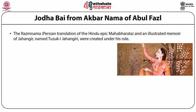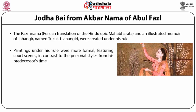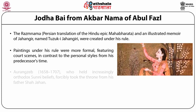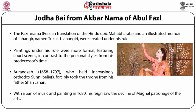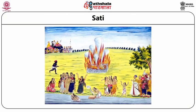The Razmnama and an illustrated memoir of Jahangir named Tuzuk-i-Jahangiri were created under his rule. Jahangir was succeeded by Shah Jahan, whose most notable architectural contribution is the Taj Mahal. Paintings under Shah Jahan's rule were more formal, featuring court scenes in contrast to the personal style of his predecessor. Aurangzeb, who held increasingly orthodox Sunni beliefs, forcibly took the throne from his father Shah Jahan. With a ban on music and painting in 1680, his reign saw the decline of Mughal patronage of the arts.